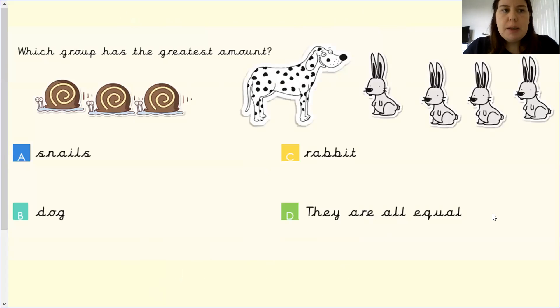So this week you are going to be looking at different styles of questions. So you can see on the board which group has the greatest amount. So you are looking for the amount that has the most. So out of these groups which group of animals has the most? So to solve that question you will have to count them.